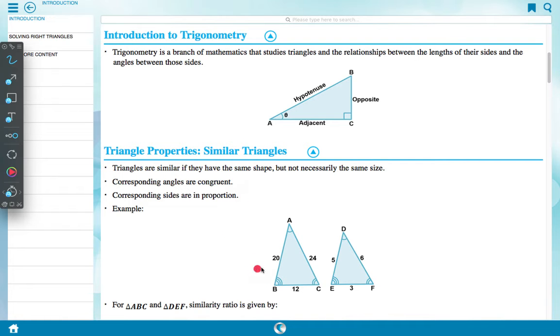Example: Here given two triangles, triangle ABC and DEF. So that is given here: AB 20 cm, AC 24 cm, BC 12 cm. Here DE 5, DF 6, EF 3. Given this information in both triangles.